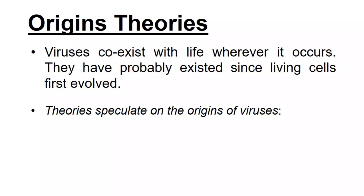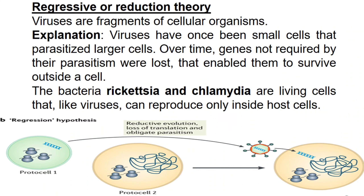Several theories speculate on the origins of viruses. The regressive or reduction theory proposes that viruses were once small cells that parasitized larger cells. Over time, genes not required for their parasitism were lost, enabling them to survive outside a cell. The bacteria Rickettsia and Chlamydia are living cells that, like viruses, can reproduce only inside host cells.